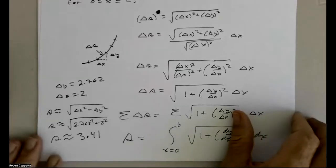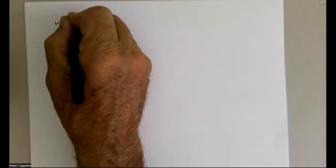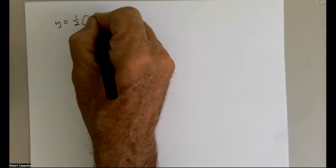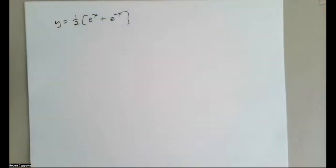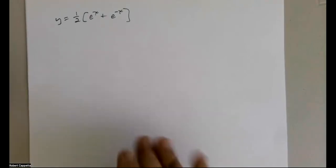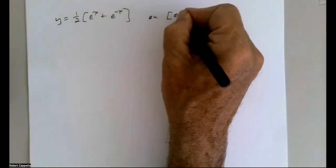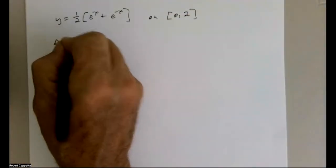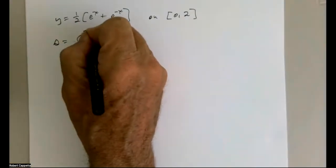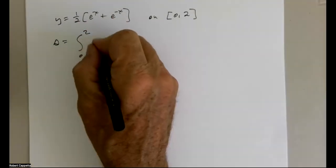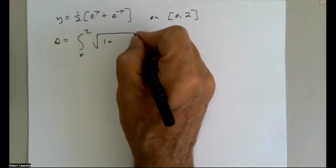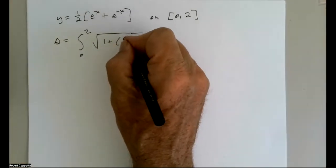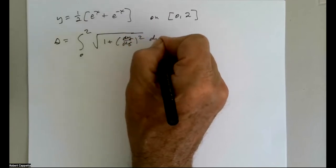We have y equals one half e to the x plus e to the negative x on the interval from 0 to 2. We developed our rule that s will be the integral from 0 to 2 of the square root of 1 plus (dy/dx)² dx.